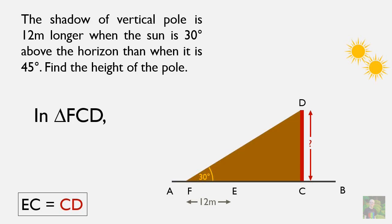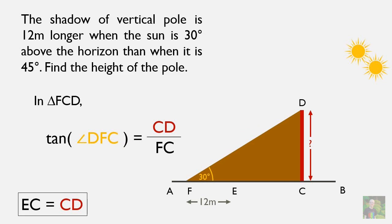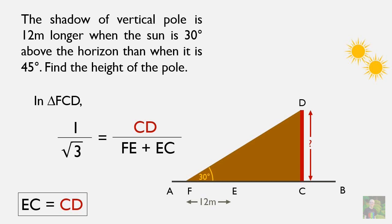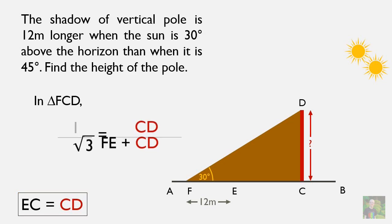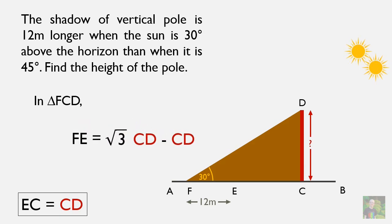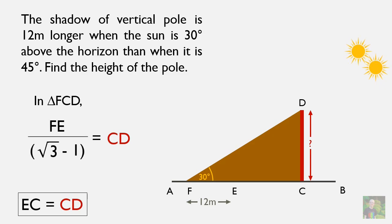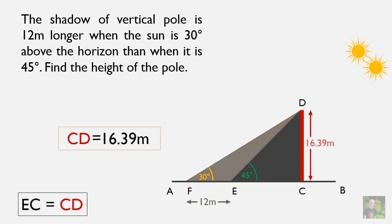In triangle FCD, tan(angle DFC) equals CD by FC, which is perpendicular by base. Angle DFC equals 30 degrees and tan 30 equals 1 by root 3. FC equals FE plus EC by the whole part axiom, and since EC equals CD, we substitute that value. After cross-multiplying and taking CD common, we get CD times (root 3 minus 1). Since FE equals 12 meters, calculating gives us CD as 16.39 meters, which is the height of the pole.